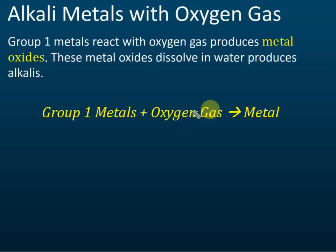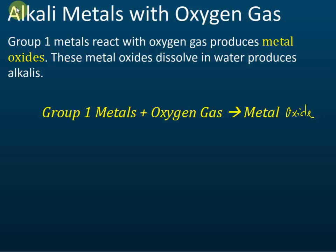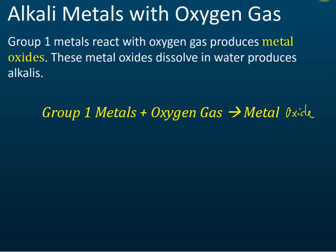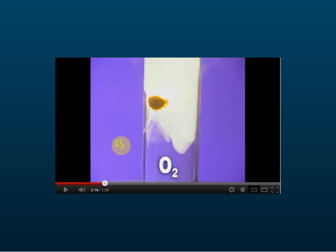Group 1 metals with oxygen produce a metal oxide, and this metal oxide is soluble in water.